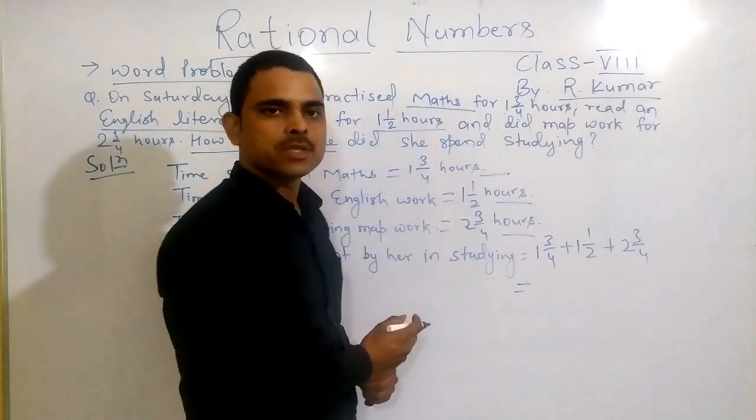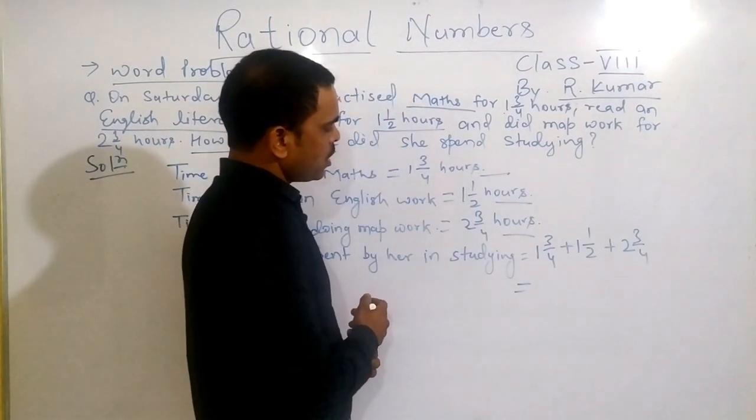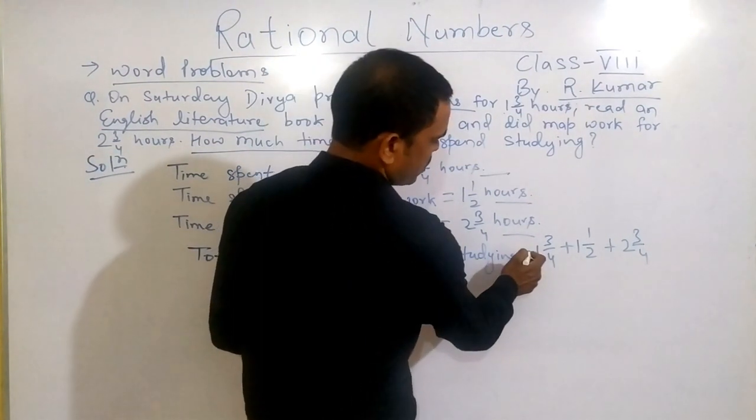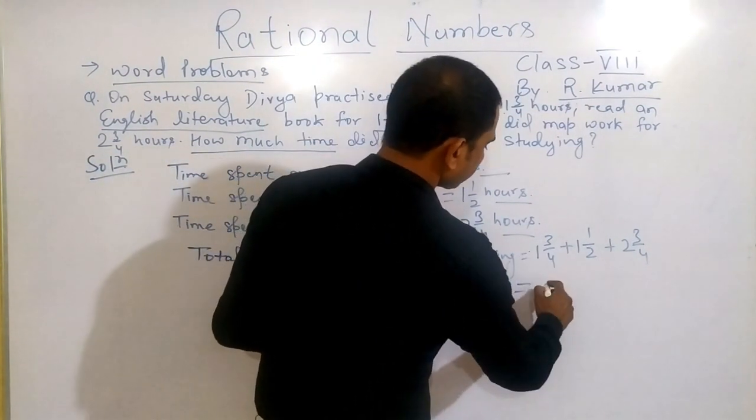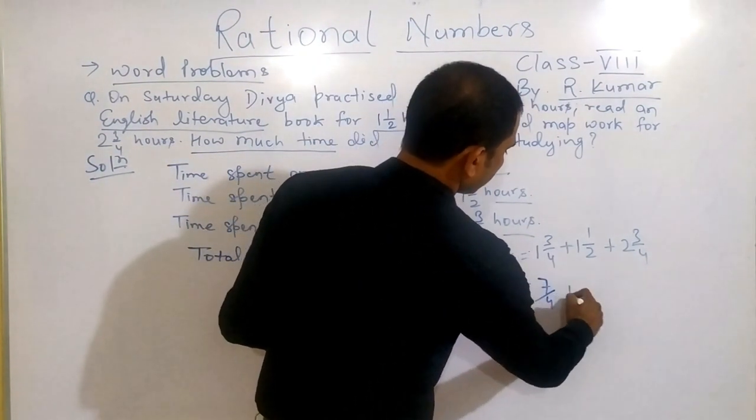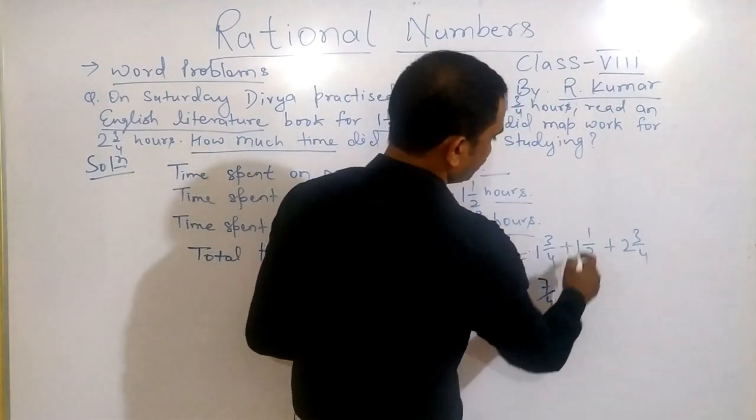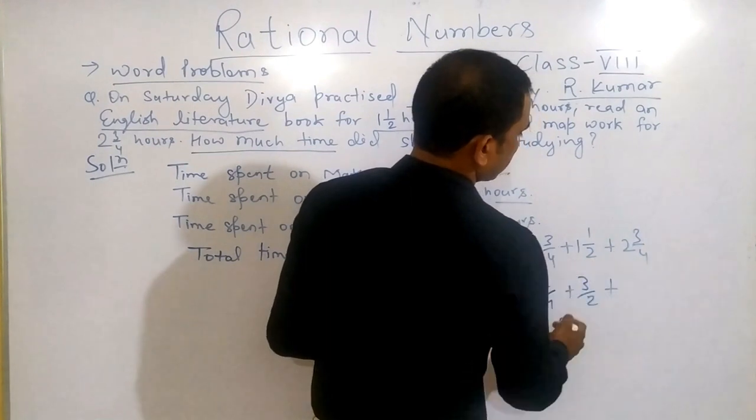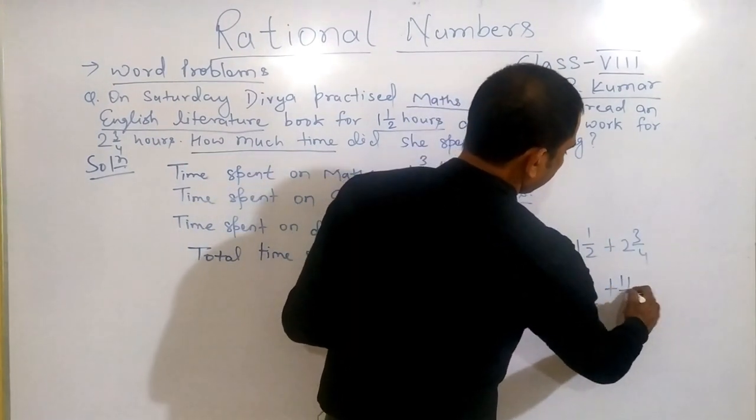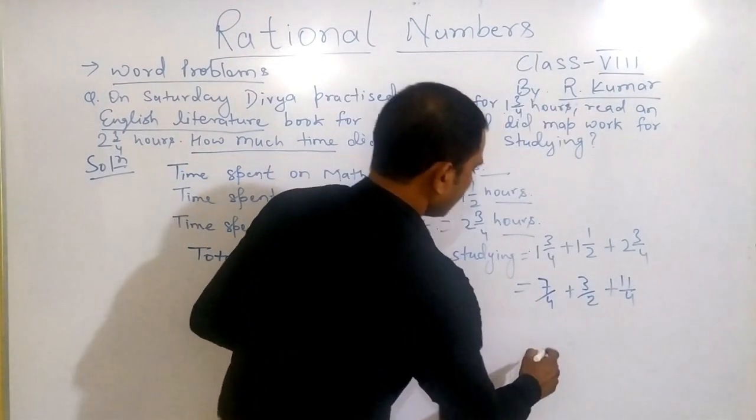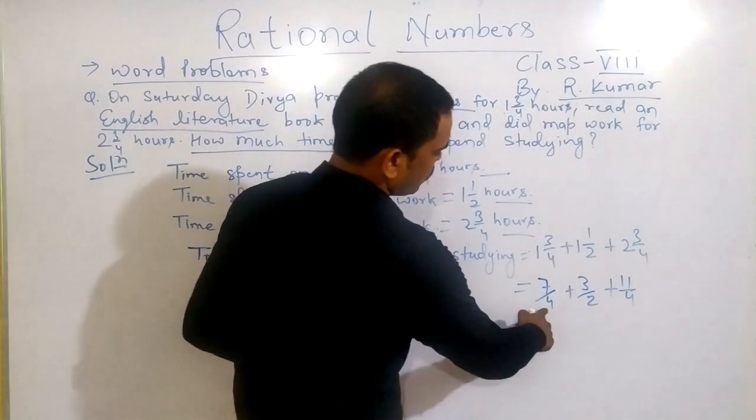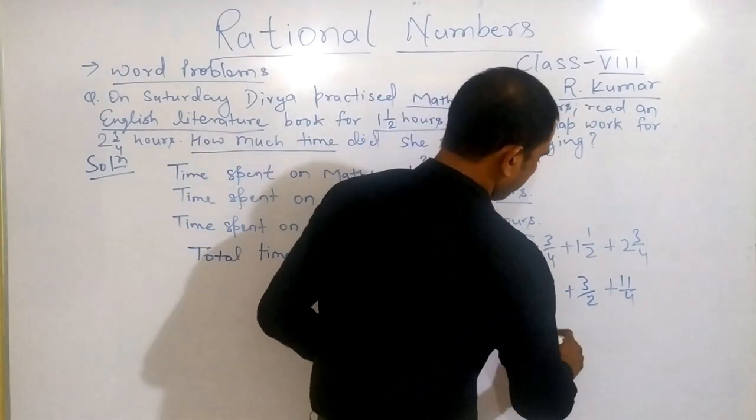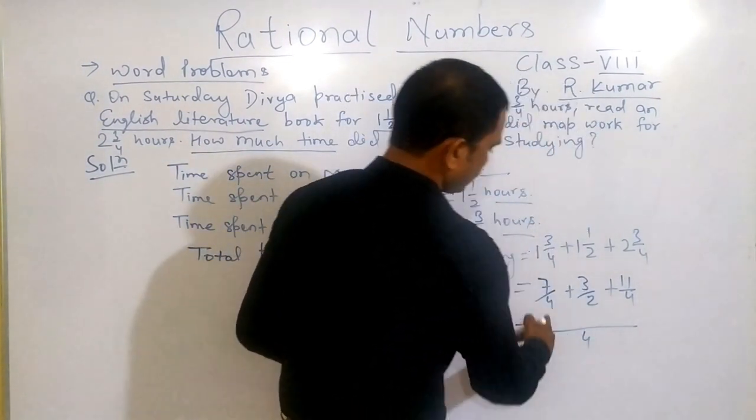First of all, you need to change it to improper. 4 times 1 is 4 and plus 3, 7 by 4, plus 2 times 1 is 2 and 1, 3 by 2, plus 4 times 2 is 8 and 3, 11 by 4.